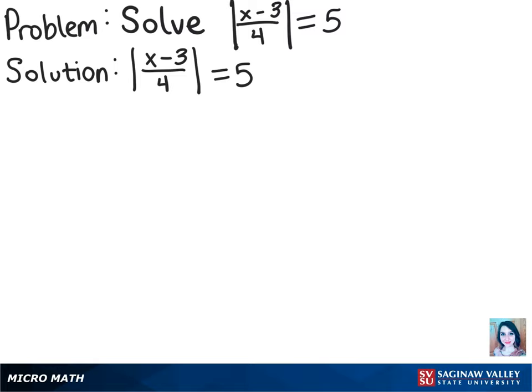Now because of the absolute value signs that make anything positive, we don't know if it was originally negative or positive. So we have to account for both instances. Let's break this up into those two possibilities.